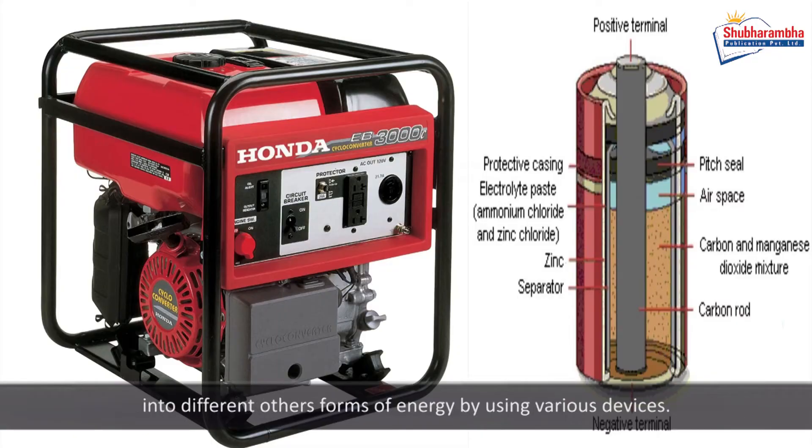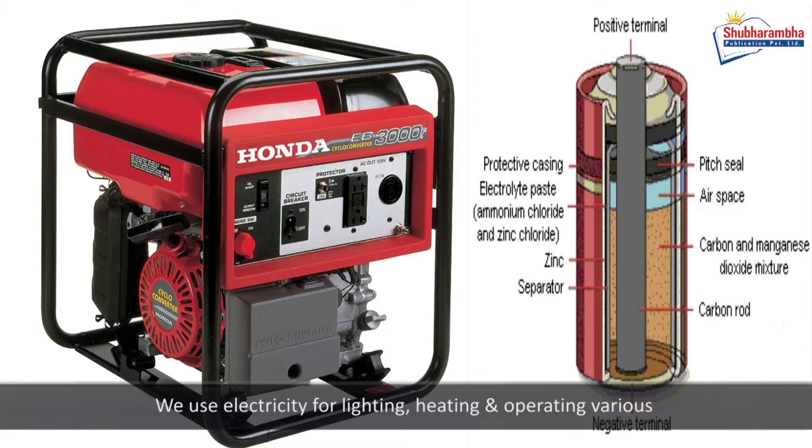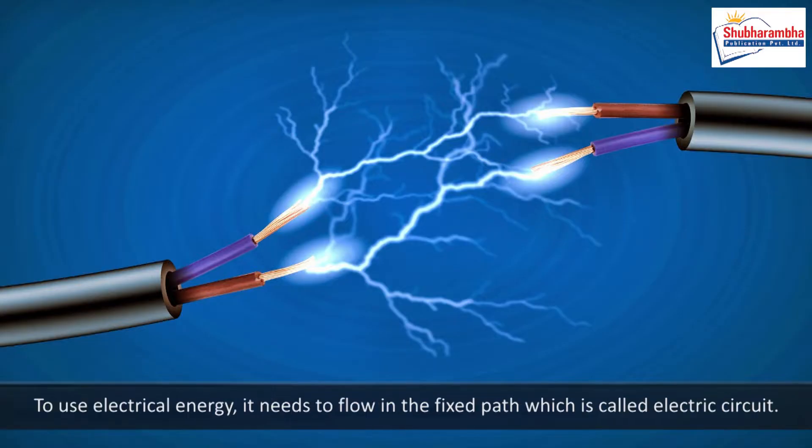We use electricity for lighting, heating, and operating various electrical appliances and electronics. The flow of charges per unit time is called electric current. To use electrical energy, it needs to flow in the fixed path which is called electric circuit.